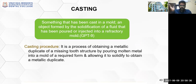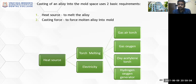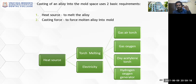Casting is the process of obtaining a metallic duplicate of a missing tooth or tooth structure by pouring molten metal into the mold of a required form and allowing it to solidify to obtain the metallic duplicate. According to GPT-9, casting is defined as an object formed by the solidification of a fluid that was poured or injected into a refractory mold. The casting of an alloy into the mold space requires two basic requirements: a heat source to melt the alloy, and a casting force to forcefully send the molten alloy into the mold space.